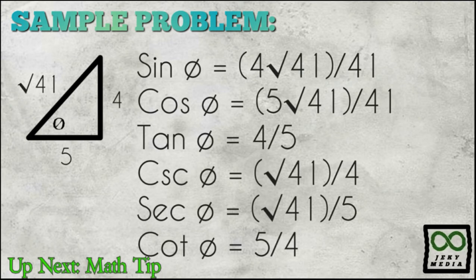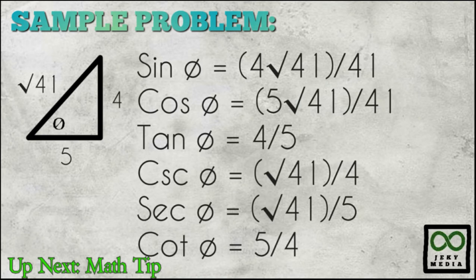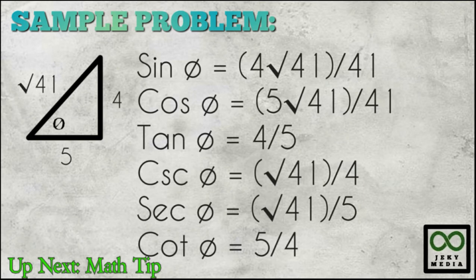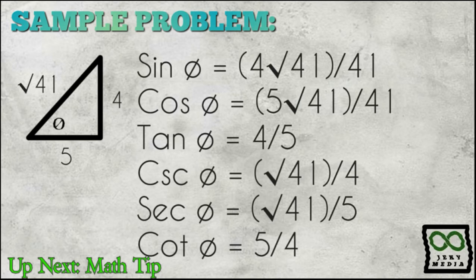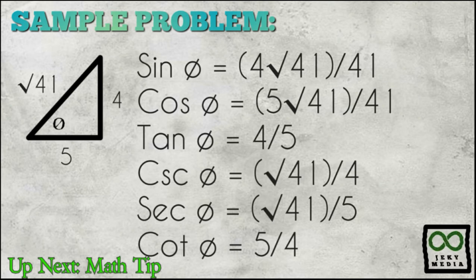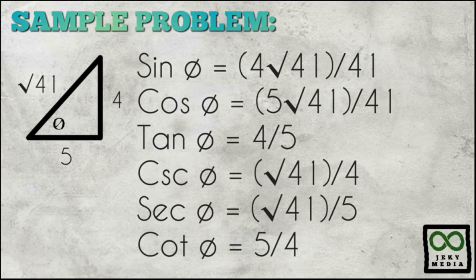We now have all the values of the six trigonometric functions for the given figure. Sine theta is equal to 4 square root of 41 over 41. Cosine theta is equal to 5 square root of 41 over 41. Tangent theta is equal to 4 fifths. Cosecant theta is equal to square root of 41 over 4. Secant theta is equal to square root of 41 over 5. Cotangent theta is equal to 5 quarters.